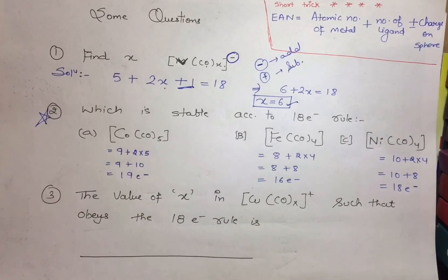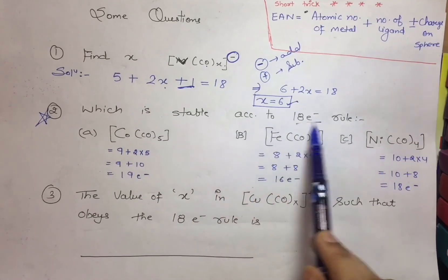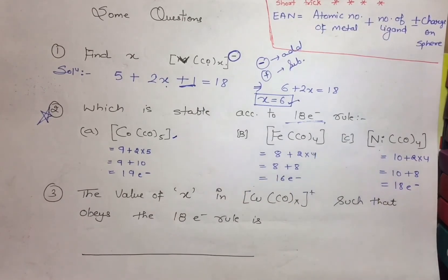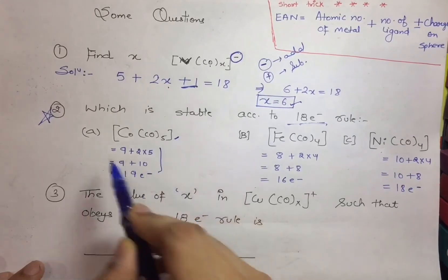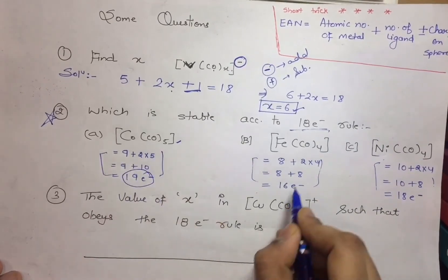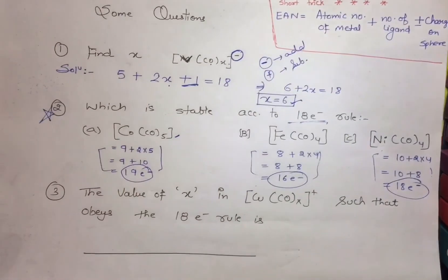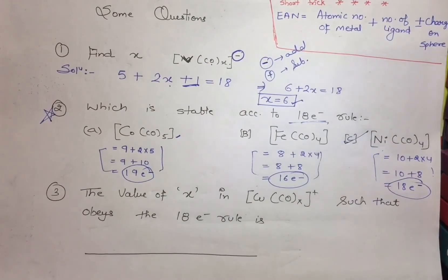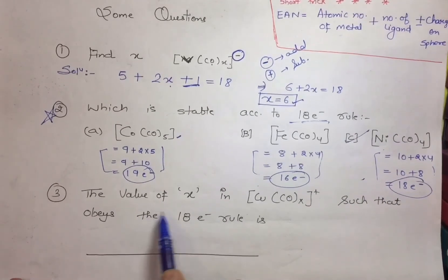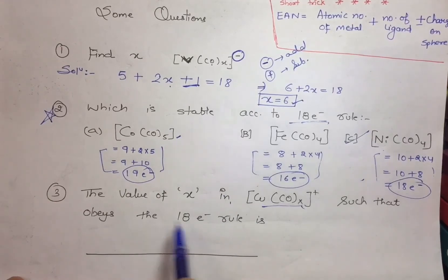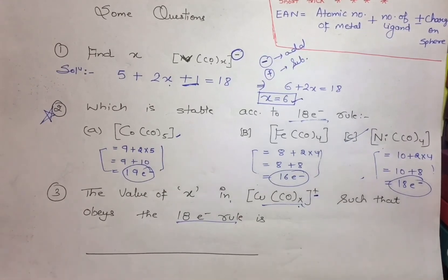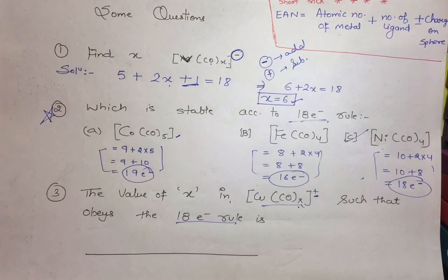The second question is from last year's IIT JAM exam: which compound is stable according to the 18-electron rule? We calculate the total electron count for all given compounds and get 19 electrons, 16 electrons, and 18 electrons respectively. Only the last compound (C) follows the 18-electron rule, so it is the stable compound. The final question asks for the value of x in an OMC that obeys the 18-electron rule, where the coordination sphere carries a positive charge — an important detail to consider.